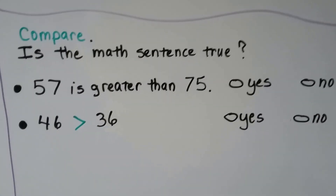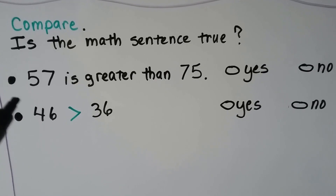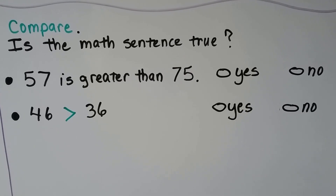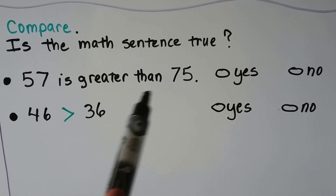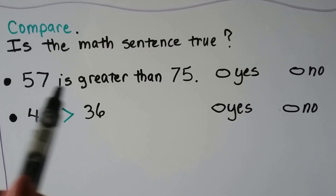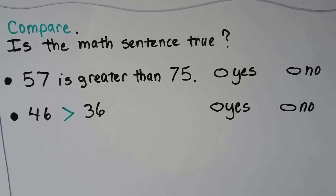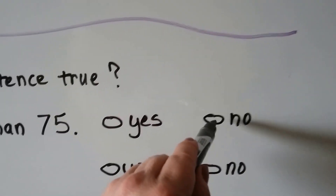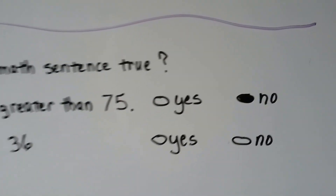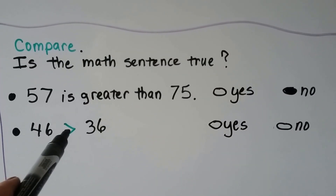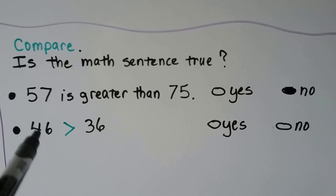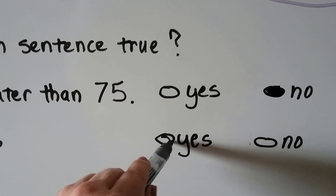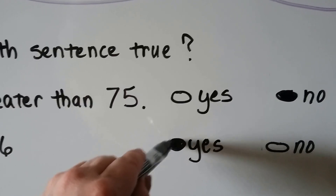We're going to compare: is the math sentence true? This one says 57 is greater than 75. Let's look at the tens place. This has 5 tens; this has 7 tens. Is 5 tens more than 7 tens? No — 7 is larger, so this one's not true. How about this one? 46 is greater than 36. We look at the tens place: 4 is greater than 3. So yes, this is true.